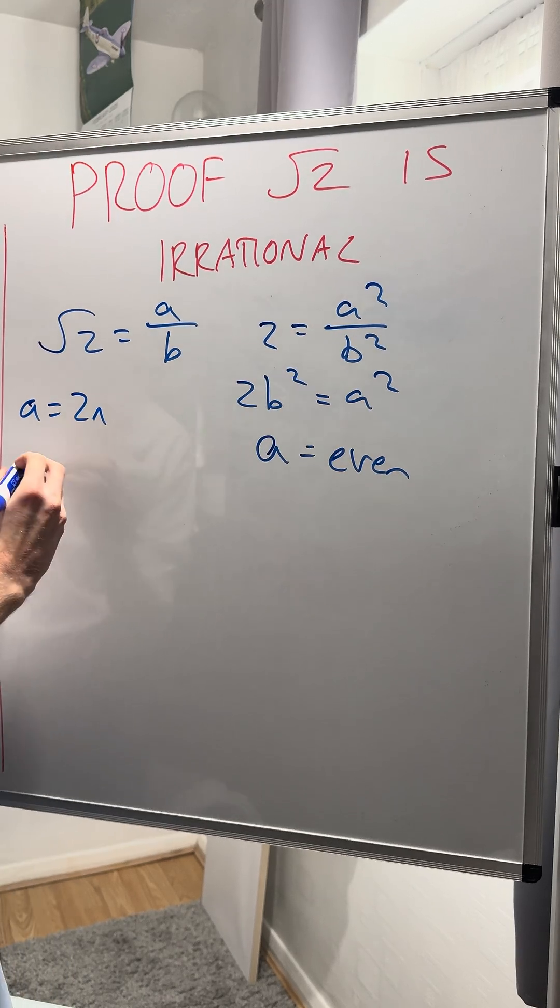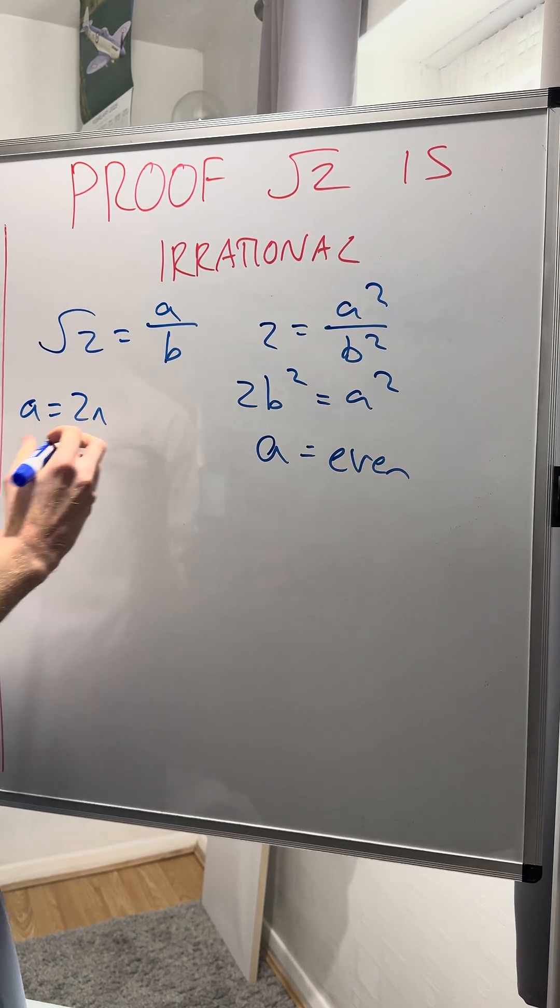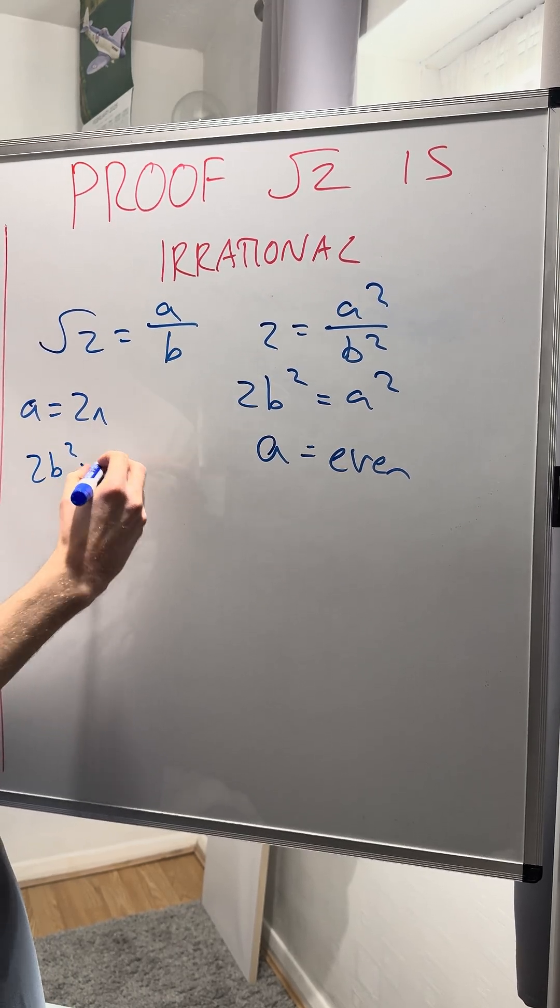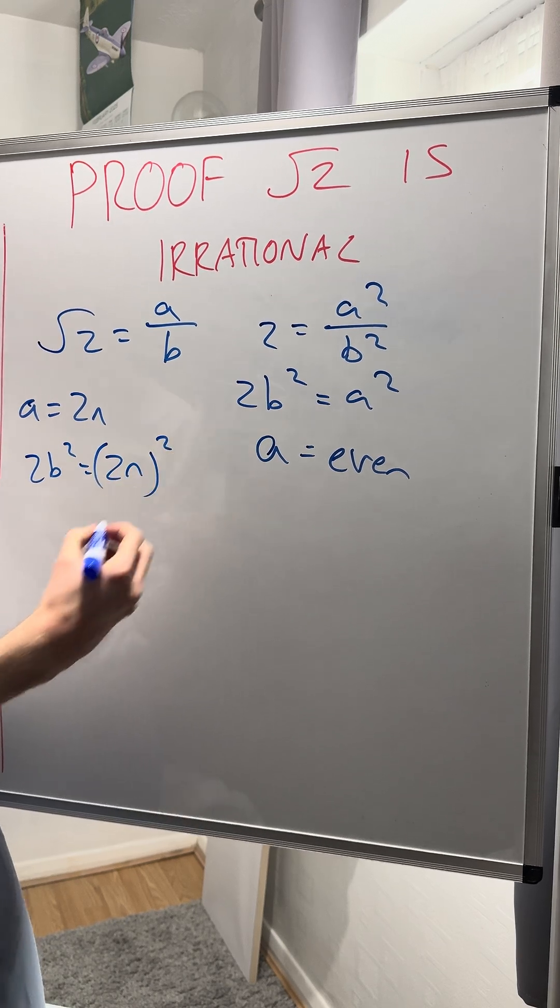If I go back to this equation, and if a equals 2n, then 2b squared equals 2n all squared.